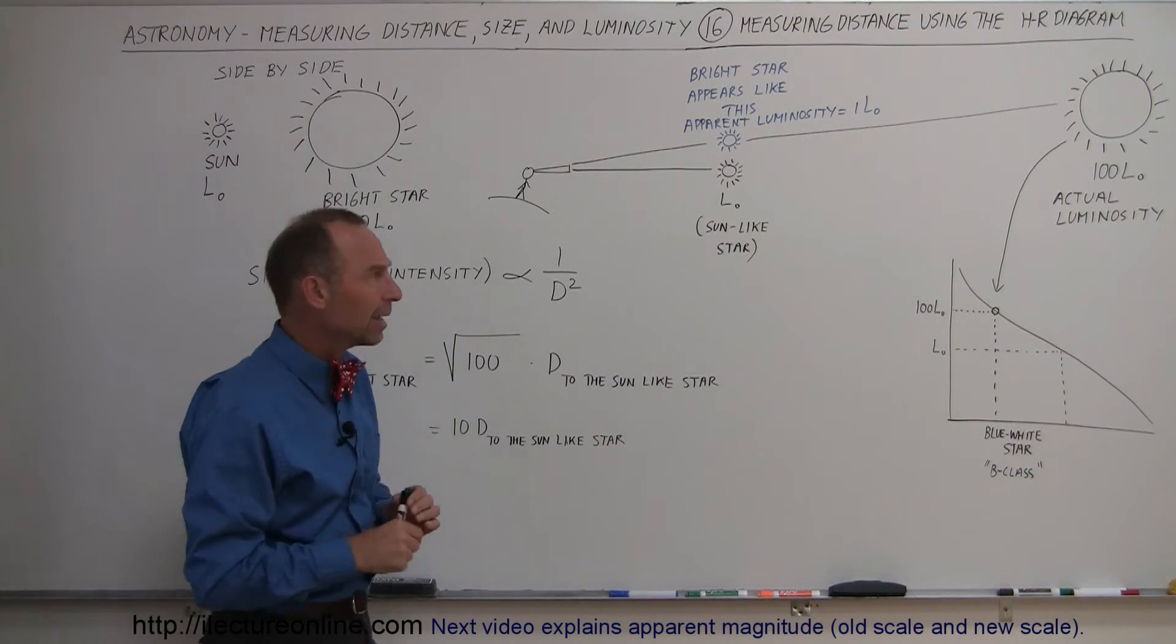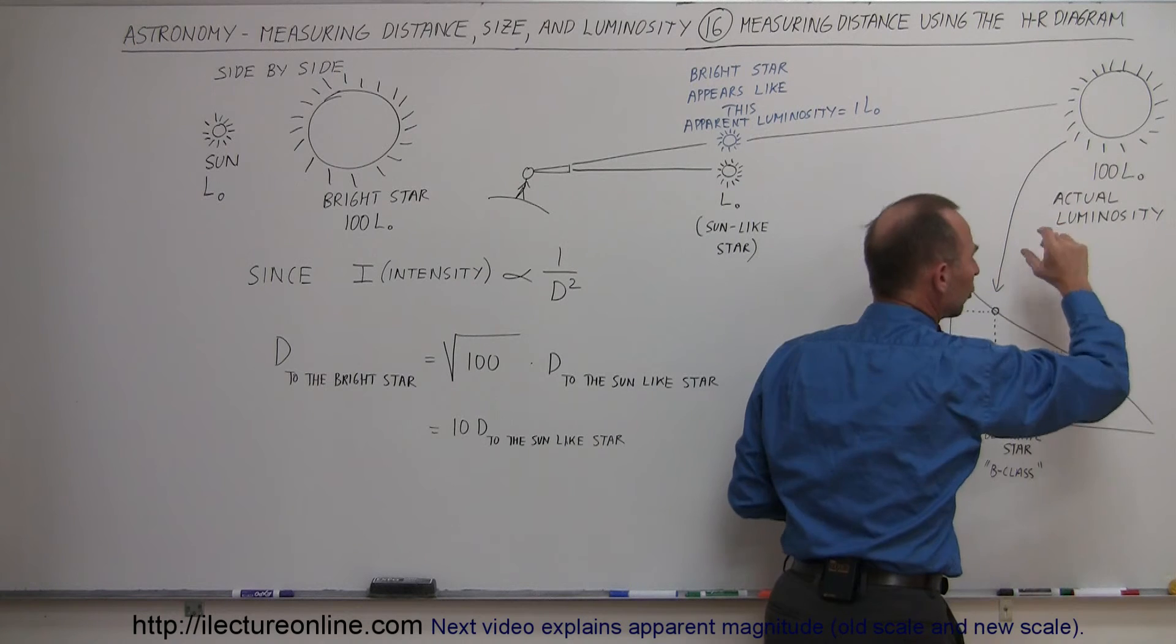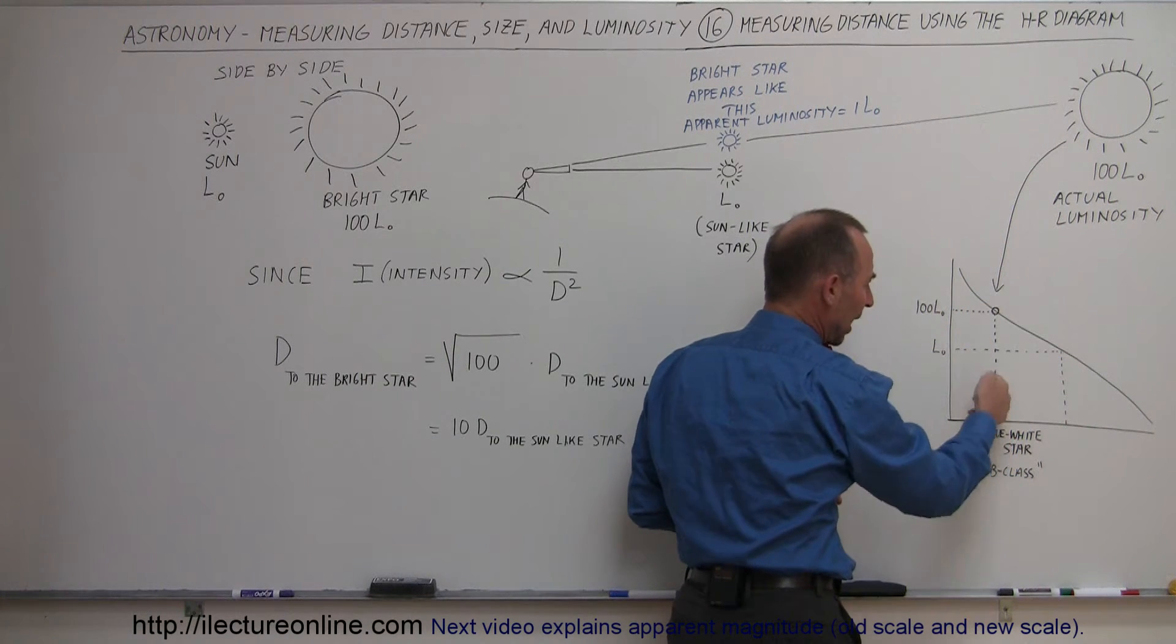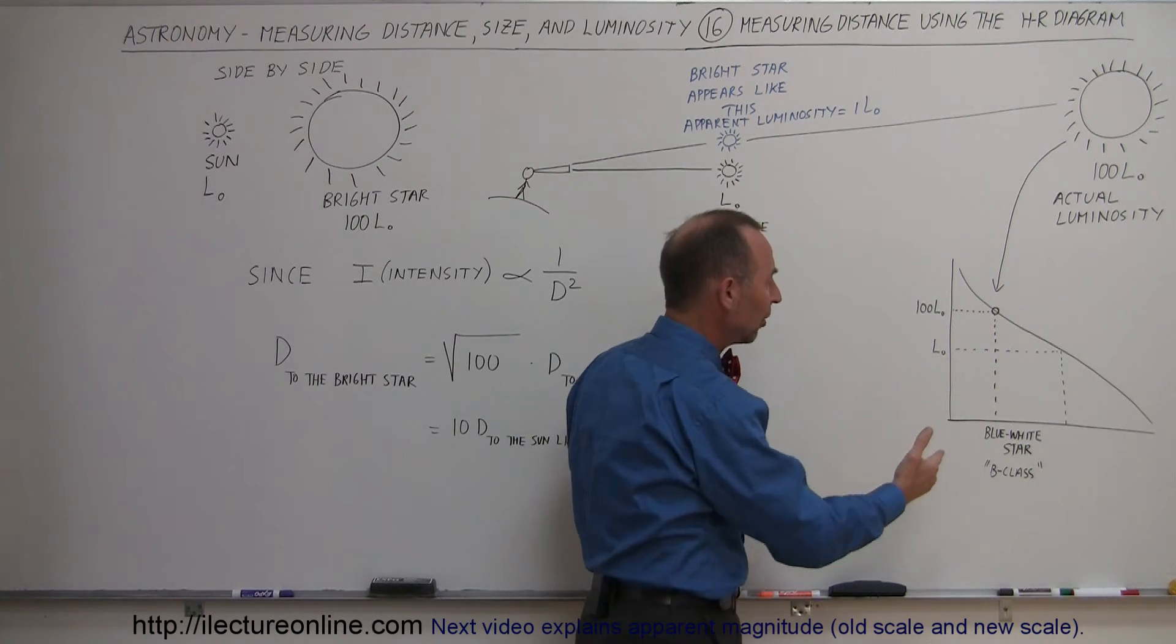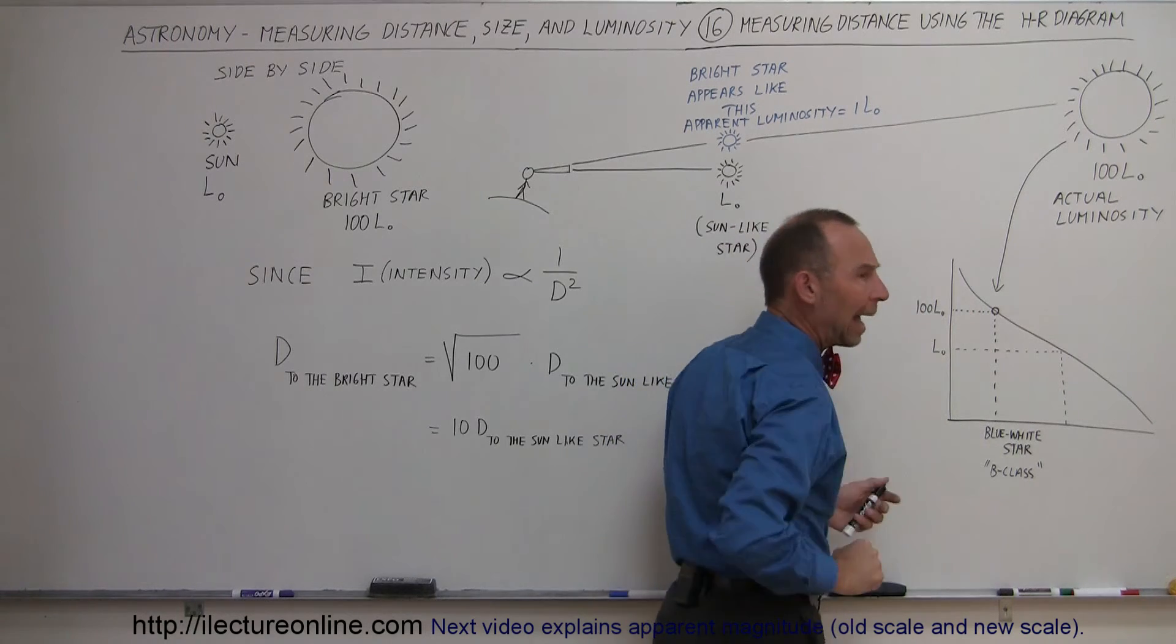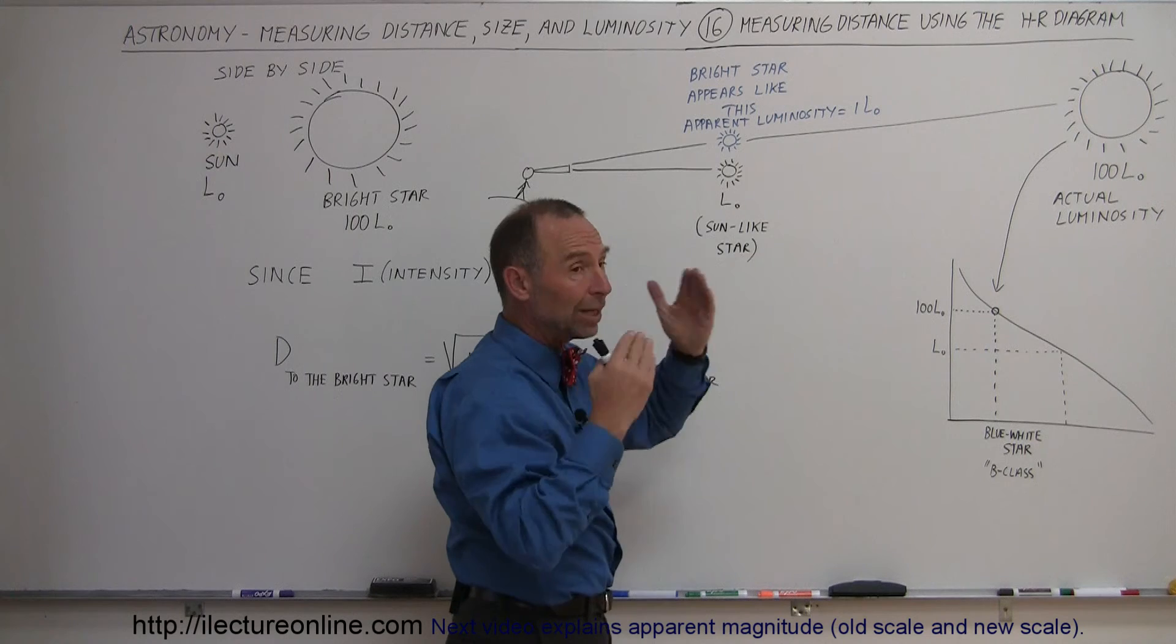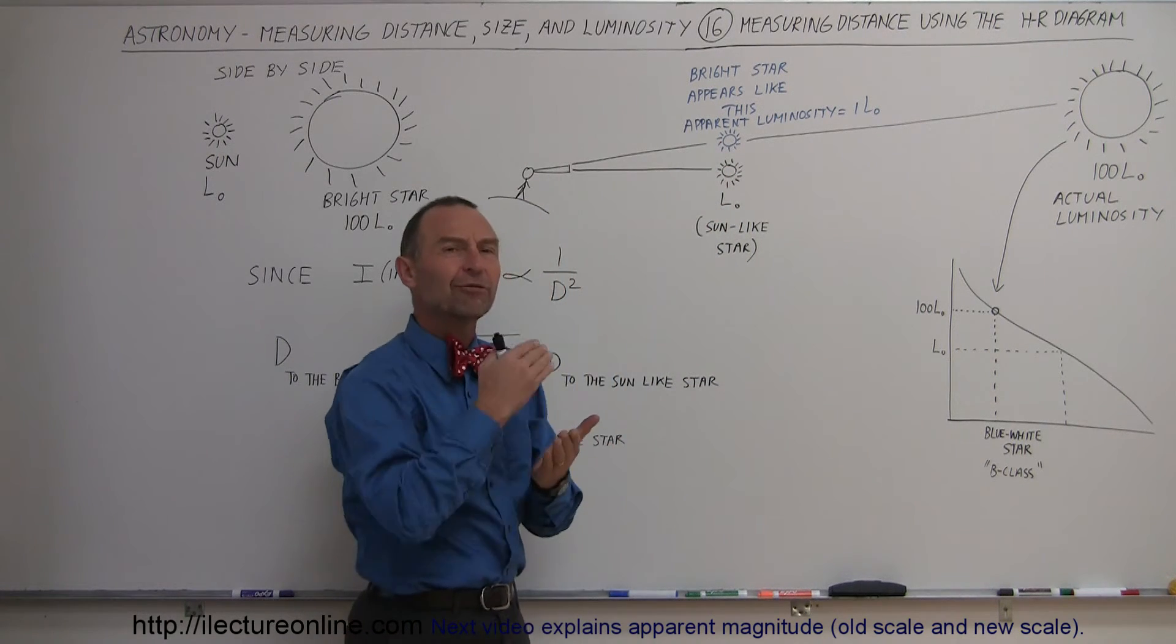But now with the H-R diagram, we're able to take a look at this star, look at its color, look at the wavelength of the light coming towards us, place it on the H-R diagram, realizing that it's a B-class star, looks bluish-white. We then come up here, and then we realize, wow, it is 100 times as bright as a sun-like star. So now we realize we're looking at a star that's really bright, but it looks no brighter than the sun-like star, so therefore it must be farther away.